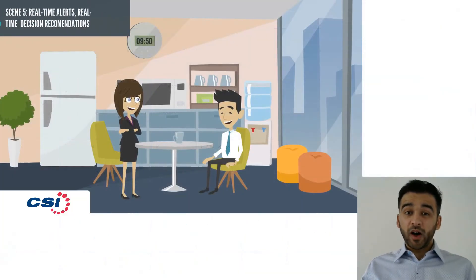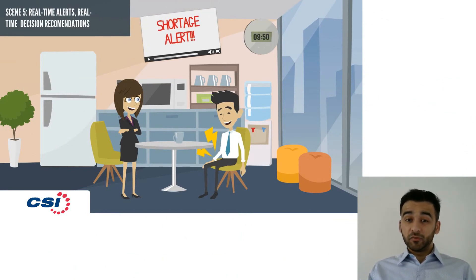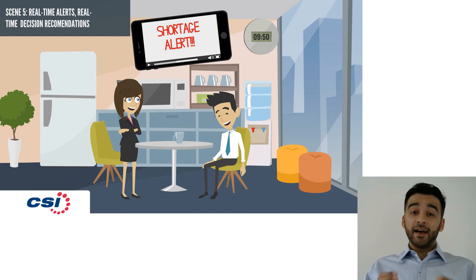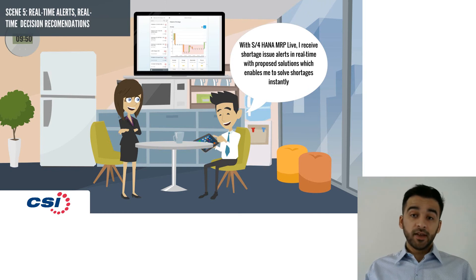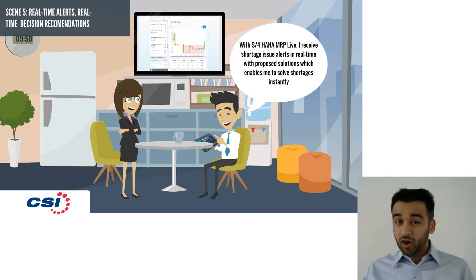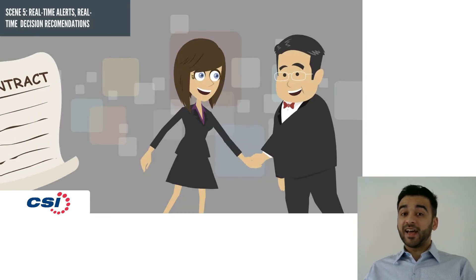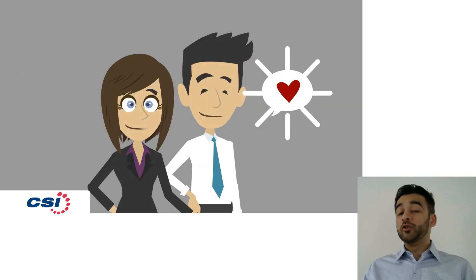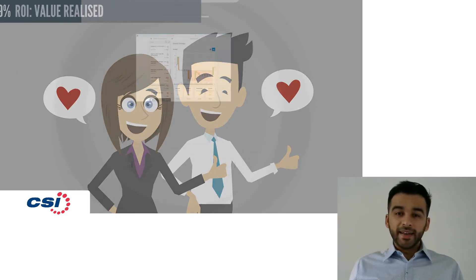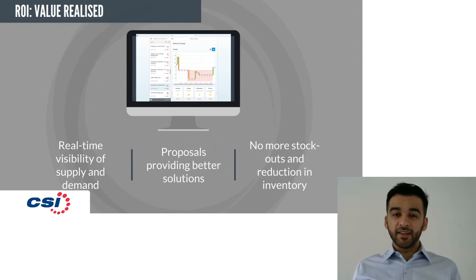Now with S4 HANA MRP Live, you have seen how Max can receive real-time shortage alerts and find better solutions for material shortage issues using the decision support system. He can now ensure that his customers receive goods on time, he meets his on-time delivery targets, and prevents Amanda from losing any more sales. He now has real-time visibility across the entire supply chain.